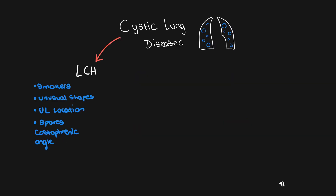The first differential to consider is Langerhans cell histiocytosis, or LCH. This occurs in heavy smokers who are usually young. They will first develop centrilobular nodules, which then form unusually shaped cysts. These cysts are found in an upper lobe location and, crucially differentiating it from other cyst-forming diseases, this pattern spares the costophrenic angles.